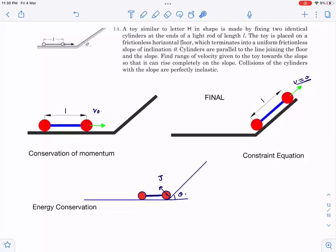When this cylinder is colliding with the slope, there will be an impulse generated in this direction perpendicular to the slope. During collision, impulse is generated perpendicular to the incline.